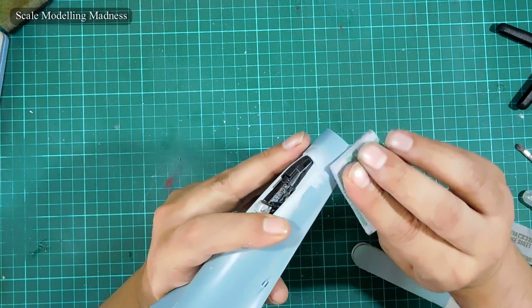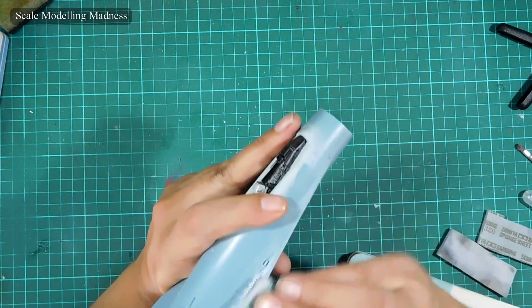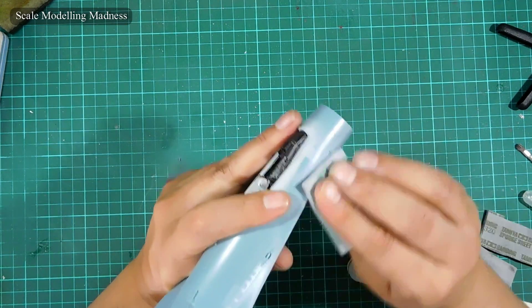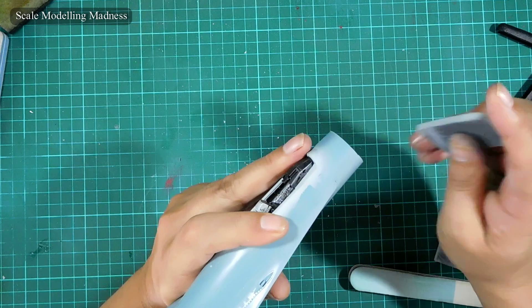I do not use the sanding stick on curved surfaces as they make them flat and then it's impossible to restore the original curve. Instead, I use sponges.